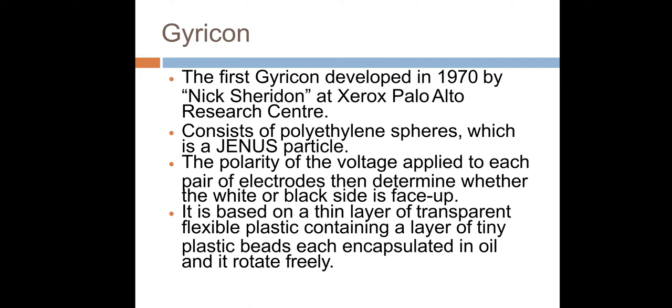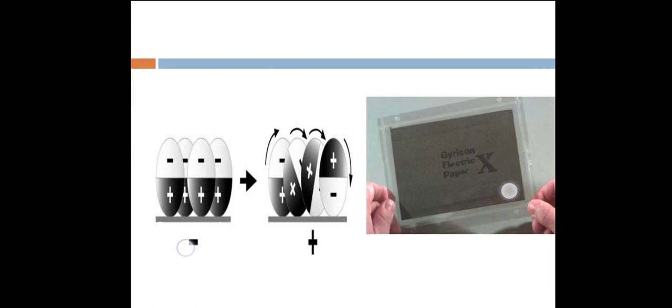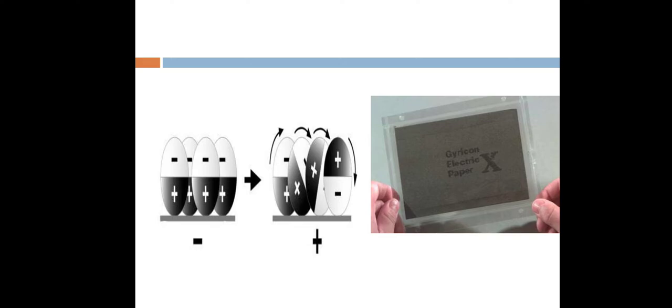Gyricon. The first Gyricon developed in 1970 by Nick Sheridan at Xerox Palo Alto Research Center. Consists of polyethylene spheres which is a Gyricon particle. The polarity of the voltage applied to each pair of electrodes then determines whether the white or black face is up. It is based on a thin layer of transparent flexible plastic containing a layer of tiny plastic beads. Each encapsulated in oil and it rotates freely. This is some pics to understand the Gyricon technologies used in e-paper display.